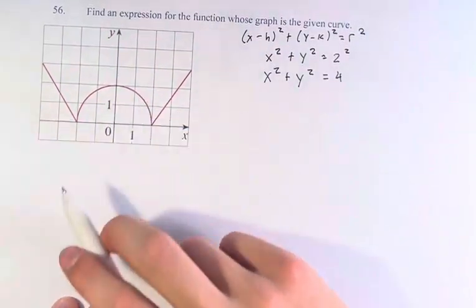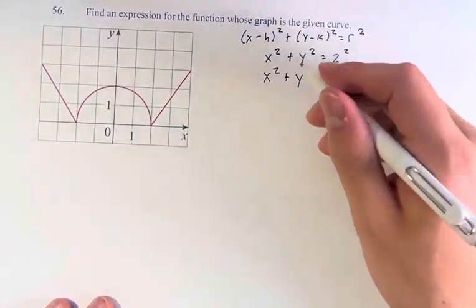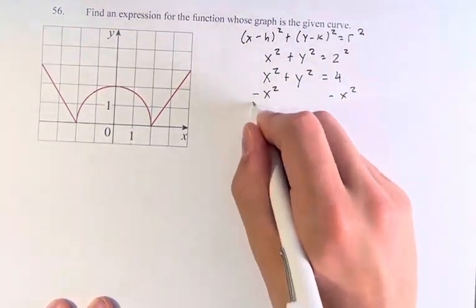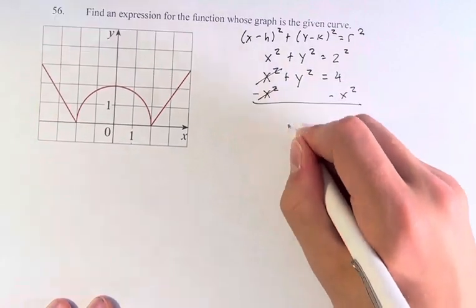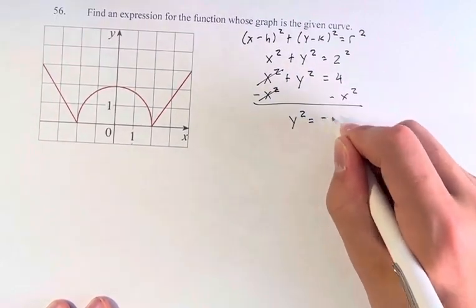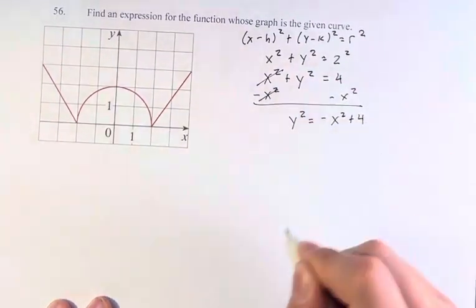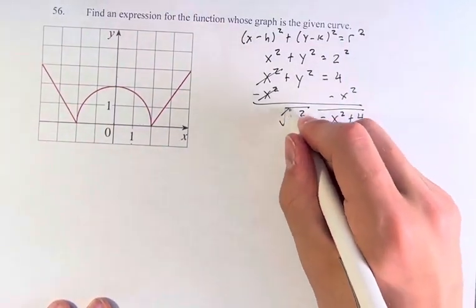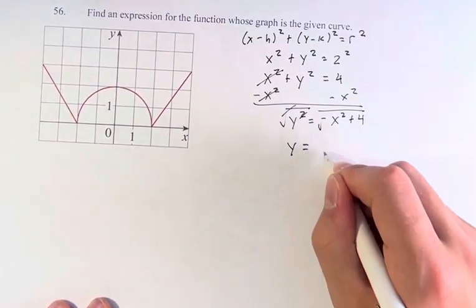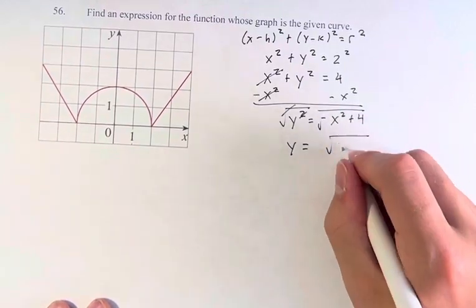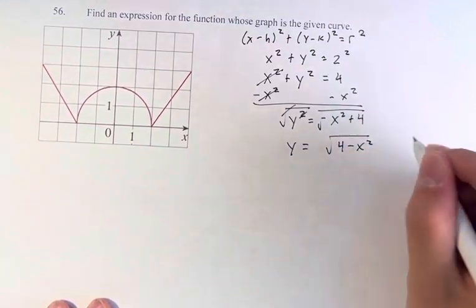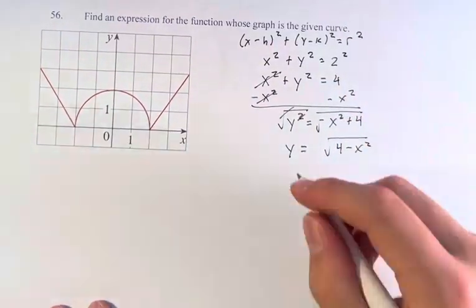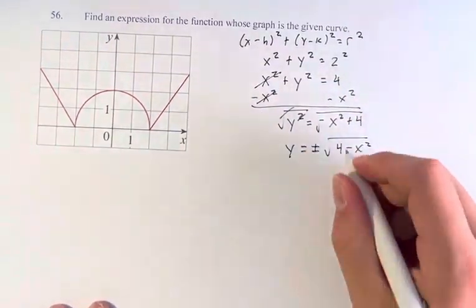We only want the top half, and we want to solve for y anyways, so let's first subtract x². These cancel. We have y² = -x² + 4. We take the square root of both sides. The square root of anything squared is just y, equals the square root of -x² - 4. I'll just write that as 4 - x², just a little bit cleaner.